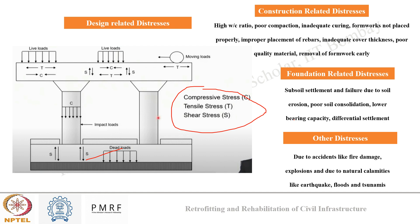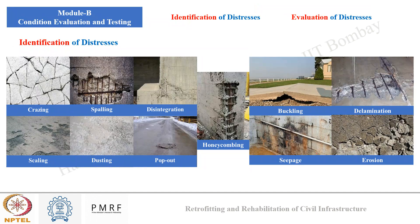Apart from these three major categories, we also talked about construction-related distress — reasons like high water-to-cement ratio, poor compaction, inadequate pouring and curing, formwork not placed properly, improper rebar placement, improper cover thickness, poor quality material, and early removal of formwork. We also discussed foundation-related distresses due to settlement or poor foundation quality, and other distresses including natural calamities like earthquakes, floods, and tsunamis, as well as accidental calamities like fire damage or explosion.